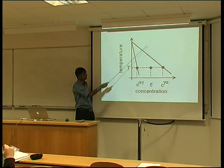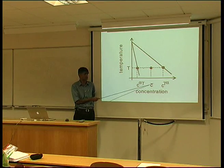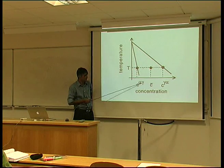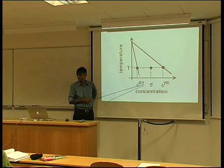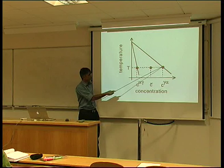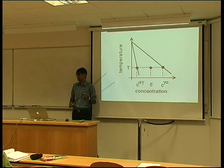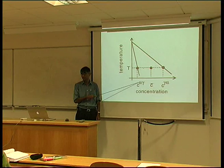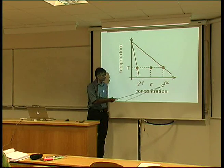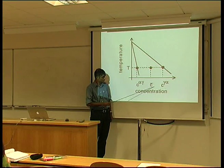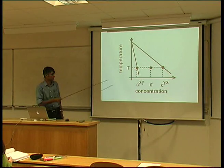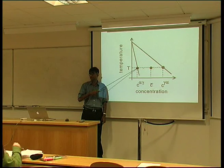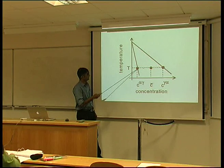Supposing I have an alloy of composition C-bar — that's the carbon concentration — and I supercool it to this temperature, then the equilibrium composition of the ferrite is given by C-alpha-gamma, where this is the composition of the ferrite which is in equilibrium with austenite. And this is the composition of the austenite which is in equilibrium with the ferrite. When I say alpha-gamma, it means the composition of alpha which is in equilibrium with gamma, and similarly, this is the composition of gamma in equilibrium with alpha. The line connecting C-alpha-gamma and C-gamma-alpha is a tie line of the equilibrium phase diagram — it connects equilibrium compositions, and this is the alpha-gamma phase field.